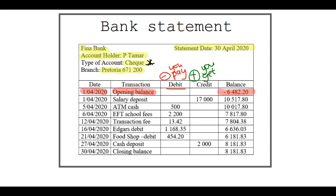He came with that negative amount from March, because that was the previous month — that's what he ended with in March, and now he's got a negative amount.